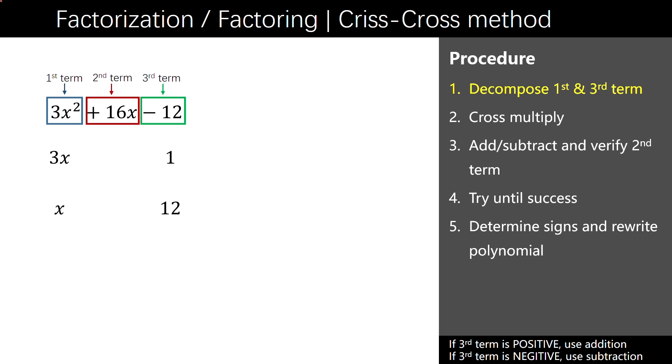Step 2. Cross multiply and list the result on the right. Step 3. As the third term is negative, we subtract the result and get 35x.